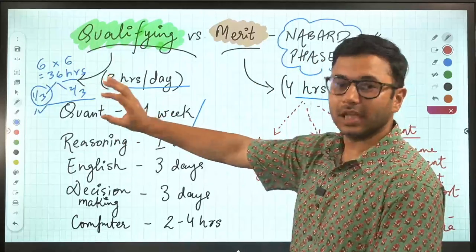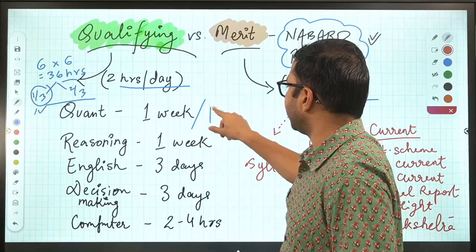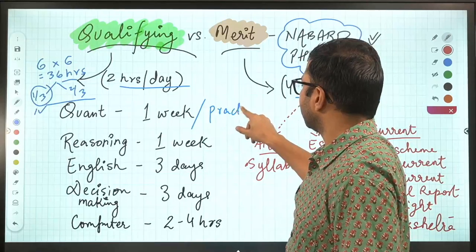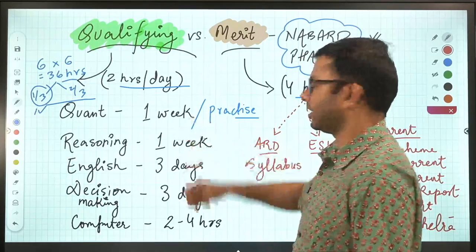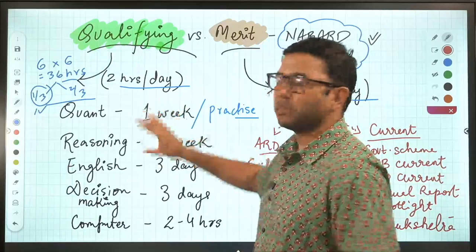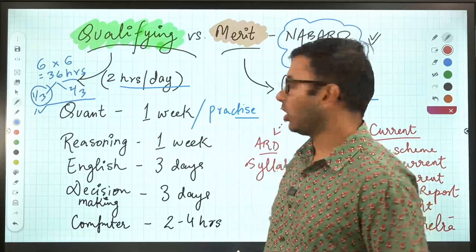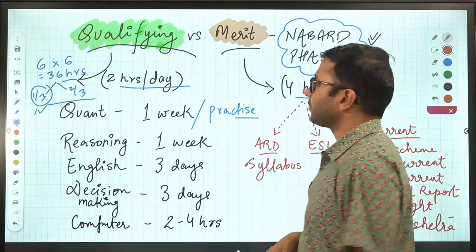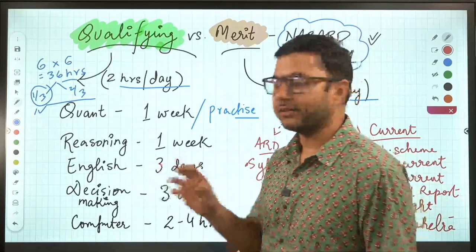If you have already done the basics of Quant, then you do practice and you save some time. Otherwise, if you're not done with the basics also, then a maximum of one week can be allocated to Quant because we don't have that much time. We just have about 40-45 days left.